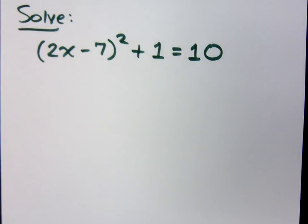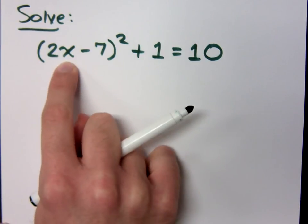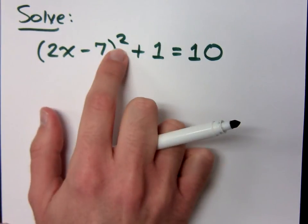All right, let's take a gander at this one. I want to do the square root property. Now, here's what tells us the square root property is the ideal method. This is the only place I have my variable. Notice that it is contained inside the square.